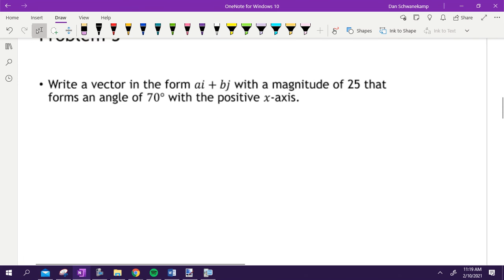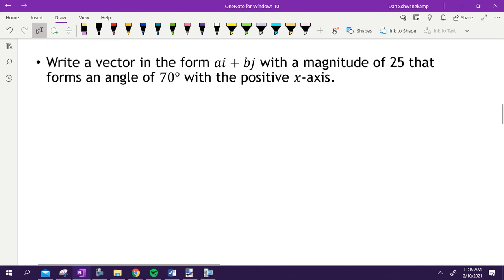Let's go to problem 3. Write a vector in the form ai plus bj with a magnitude of 25 that has an angle of 70 degrees with a positive x-axis. Break out your calculator. You're going to need it here. But give me a vector. Go. Let's quickly remind ourselves how we can do this very simply. Okay. We want to write it in this form right here, which is vector form. This is my magnitude. So that is the force. Okay. How could I figure out the x and y given these angles?